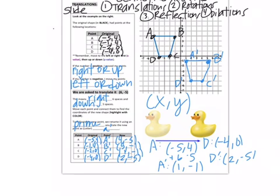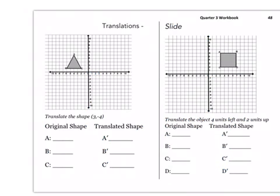Next page. All right, so page 48. Go ahead and start by getting the ordered pairs for A, B, C. Write those here for the original shape. The rule is here. Write 3, because the x is going positive 3. Y is going down 4.